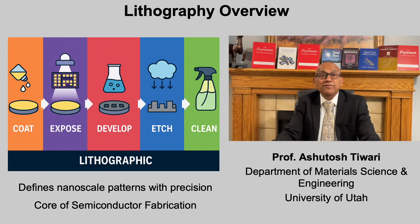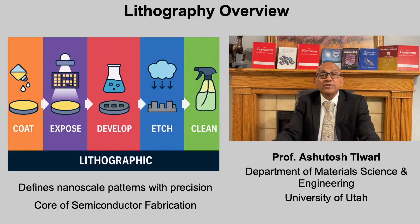Lithography aims to define nanoscale patterns with high spatial precision. The typical process cycle includes substrate preparation and resist coating, exposure to a beam of light or other radiation, development to reveal the pattern regions, etching to transfer the pattern into the substrate, and resist removal for a clean surface. This coat-expose-develop-etch-clean sequence underpins nearly every semiconductor and MEMS fabrication workflow. Lithography thus translates digital design data into tangible nanostructures.